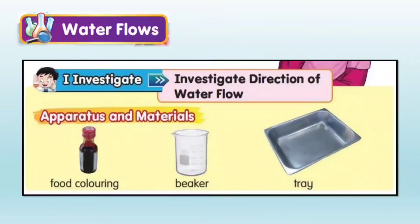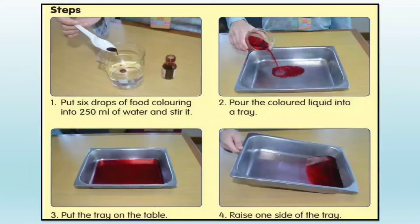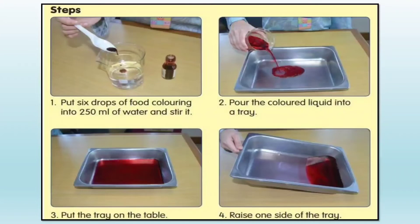Let's investigate directions of water flow. Step 1: Put 6 drops of water colouring into 250 ml of water and stir it. Then pour the coloured liquid into a tray. After that, put the tray on the table and raise one side of the tray.